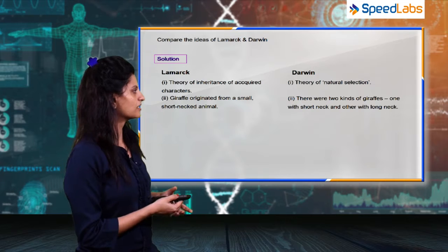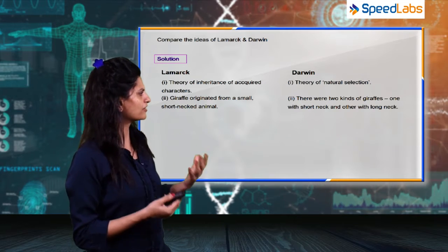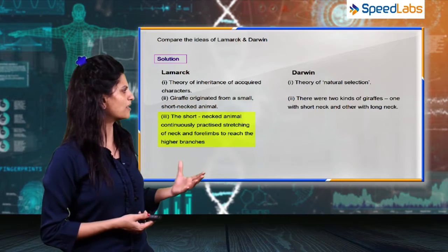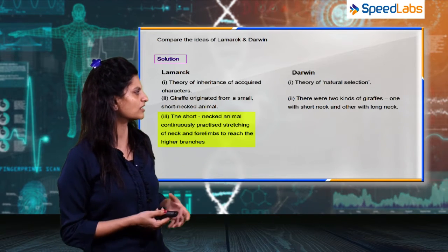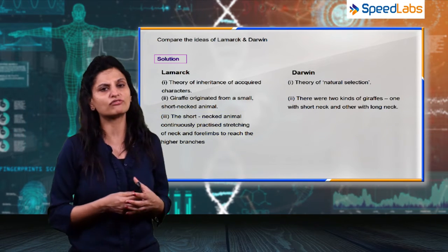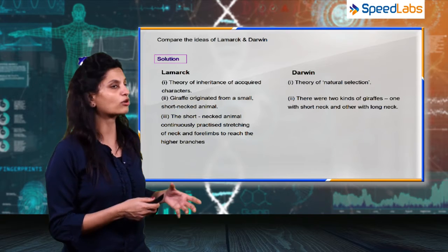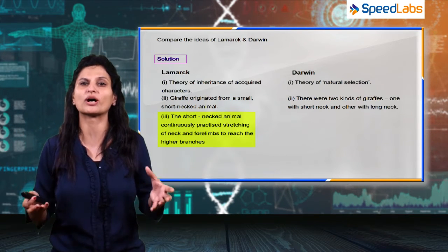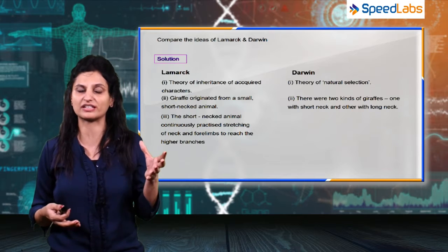Third was explaining the character of the short neck and the long neck. Lamarck said that the short-necked animals continuously practiced stretching of necks and the forelimbs to reach the higher branches. Basically, it was an acquired character - when the environment changed, the animal stretched its neck to reach the leaves on top of the trees in order to survive.